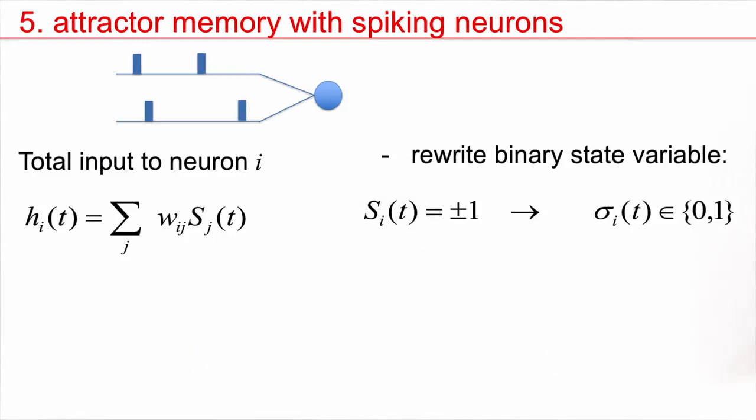So a better description would be binary input in the form of zeros and ones. Let us try to rewrite the equation. I just replace S by sigma. Let's propose a combination that S_i is 2 sigma_i minus one. If I plug in sigma equal one, I get an output of one. If I plug in sigma equal zero, I get an output of minus one. So this is just a rewrite which works in both directions.